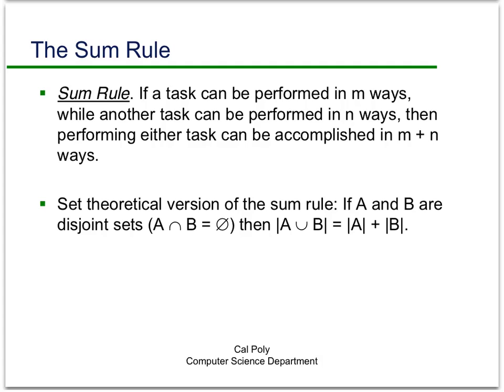The sum rule is the other basic principle, and again we've been using this informally all along. Basically, if you have one task or one choice that can be done in m ways and another that can be done in n ways, then the number of choices if you can only perform one of those two tasks is m plus n. From a set perspective, if the intersection of two sets is the empty set, then the cardinality of A union B — the number of choices from either A or B — is the cardinality of A plus the cardinality of B.